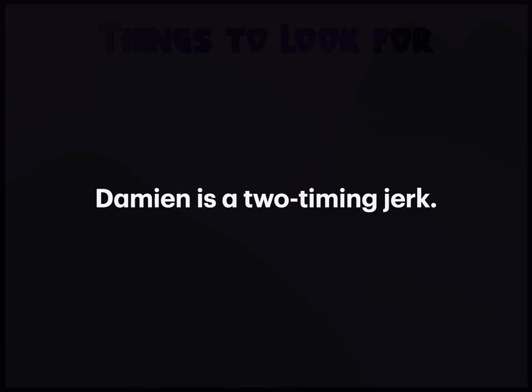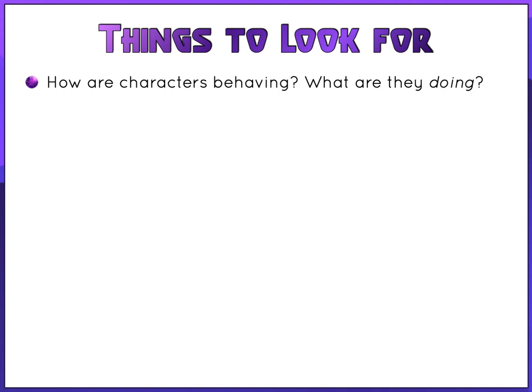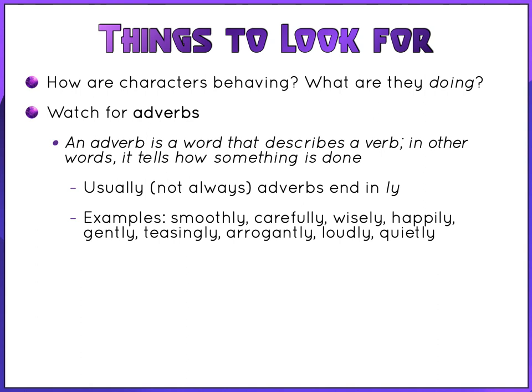Things to look for when making inferences: how are characters behaving and what are they doing — those show emotion. Watch out for adverbs — they're great clues. An adverb describes a verb and tells how something is done. Adverbs typically, but not always, end in -ly: smoothly, carefully, wisely, happily, gently, teasingly, arrogantly, loudly, quietly. They imply an emotion. Also watch for adverbs like 'suddenly' or 'abruptly' — these indicate a rapid change and are excellent clues that emotion is happening. If someone does something suddenly, it's usually because of an emotional reason or something they're reacting to.